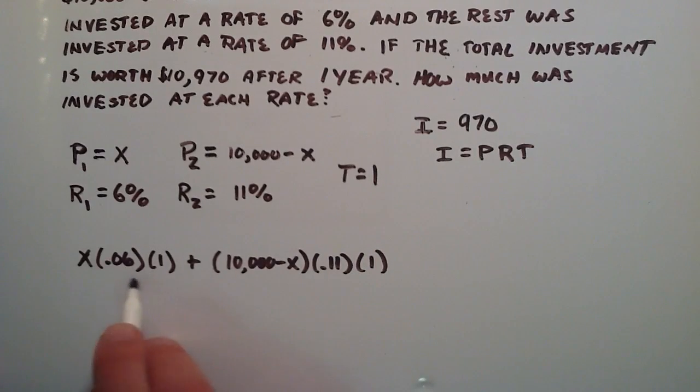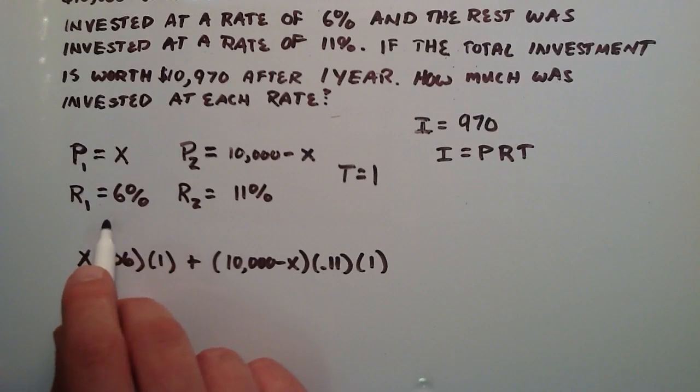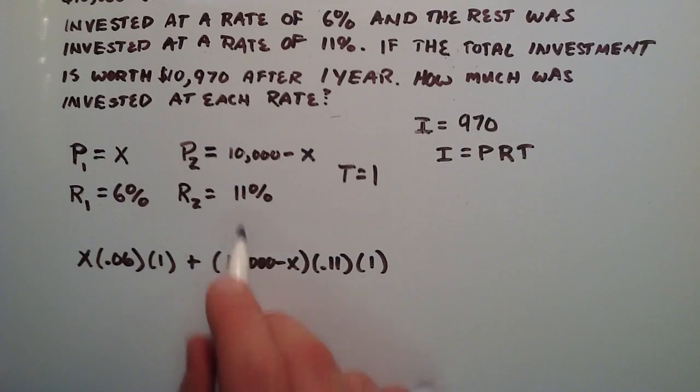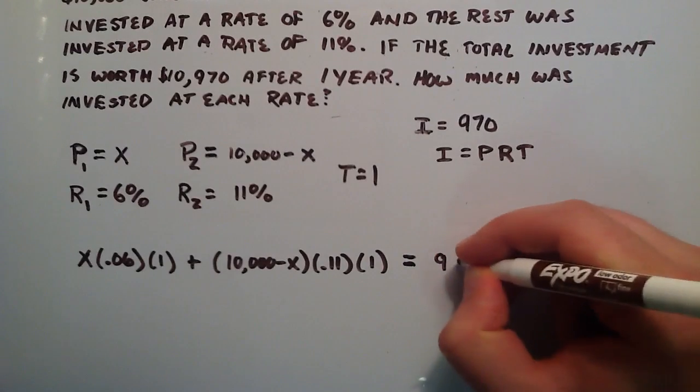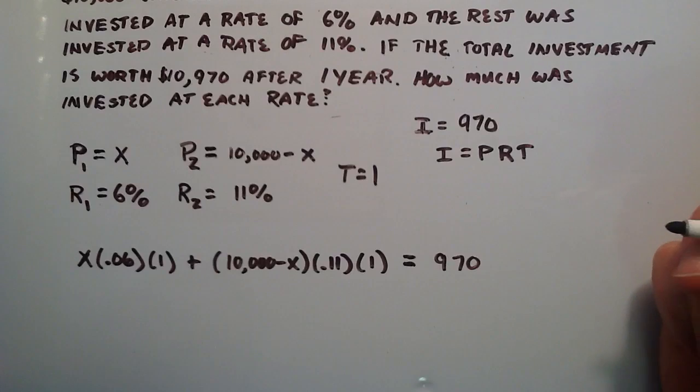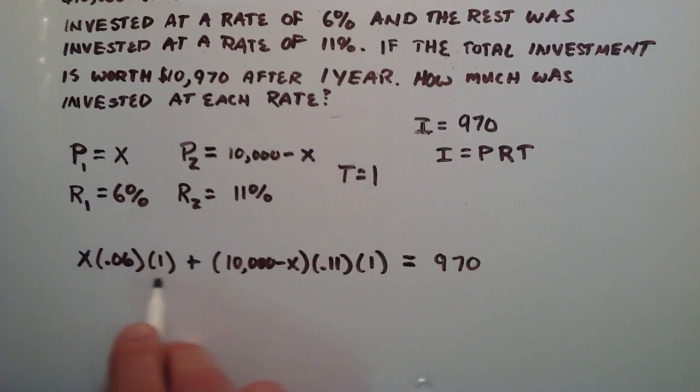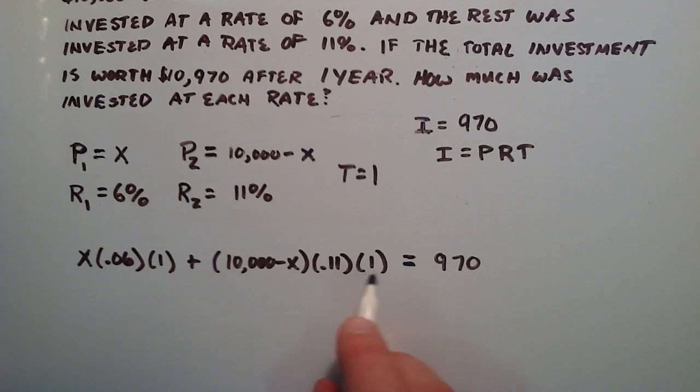plus the interest we made off of the other chunk of investment. And we know that the total investment made us an interest of $970. So the interest off the first chunk plus the interest off the second chunk equals $970 total interest. So now we just have a simple algebra problem to solve here.